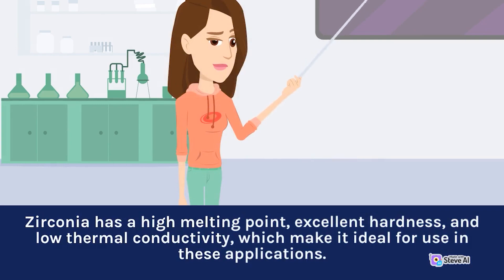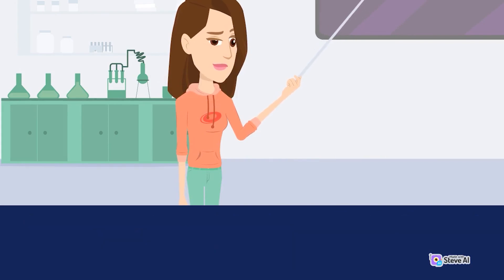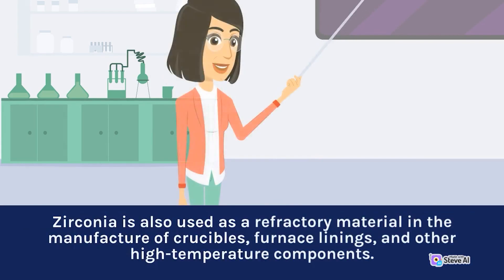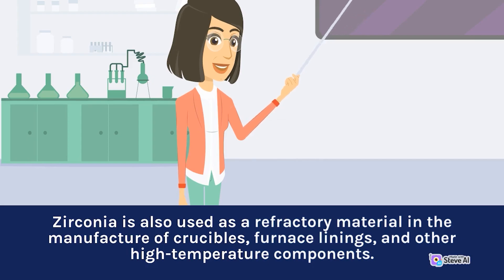Zirconia has a high melting point, excellent hardness, and low thermal conductivity, which make it ideal for use in these applications. Zirconia is also used as a refractory material in the manufacture of crucibles, furnace linings, and other high-temperature components.